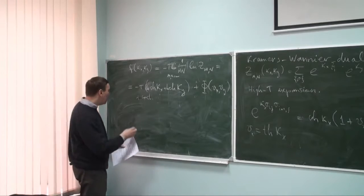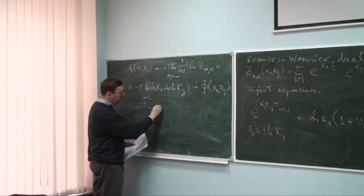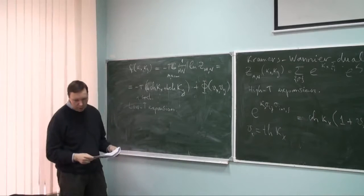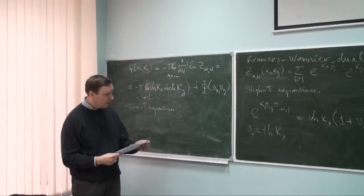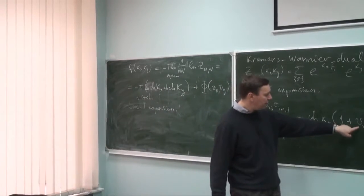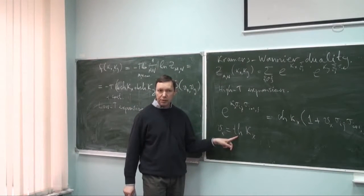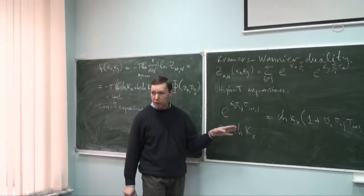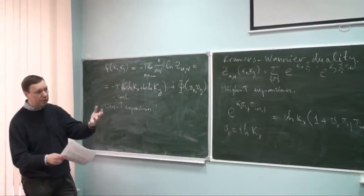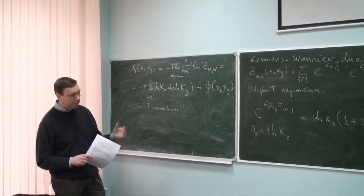The factor of 2 comes from the fact that in the low-temperature picture, every configuration is doubled: we can have all spins pointing up or all spins pointing down, and for every domain wall configuration we can flip all spins and get a configuration of the same energy.